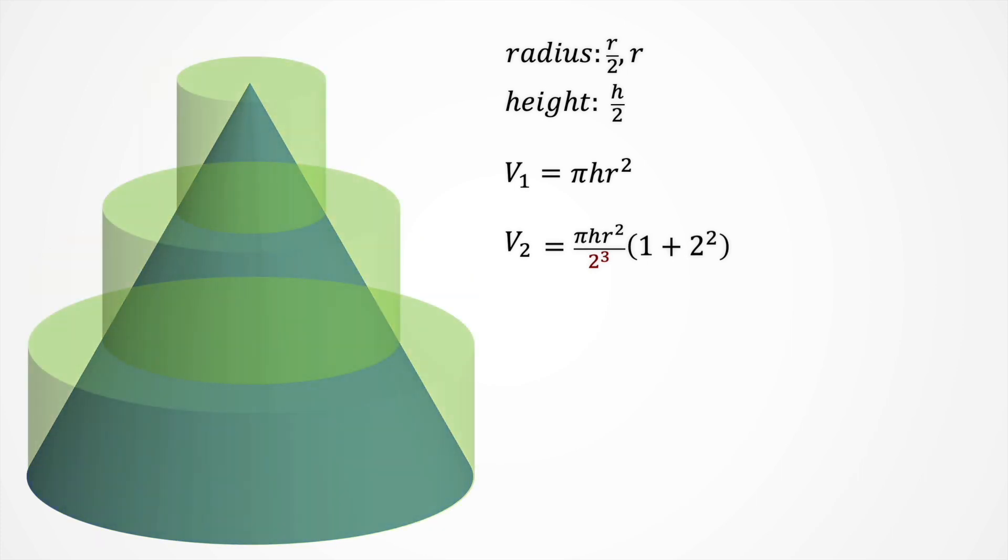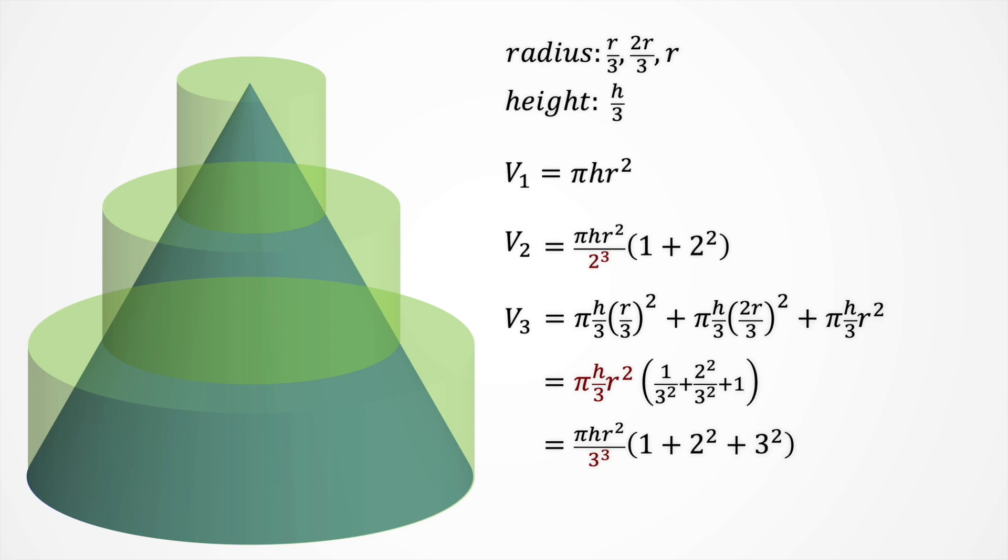With three cylinders, we extend the pattern for the radius sequence. And we have another height. The volume is compound now of three terms. We take out the common factor and arrange all again so we end with three cubed on the denominator, and one plus two squared plus three squared inside the parenthesis.